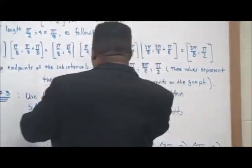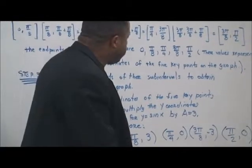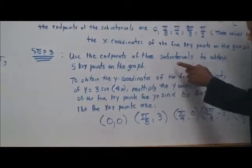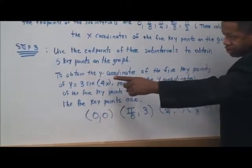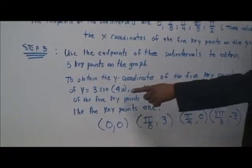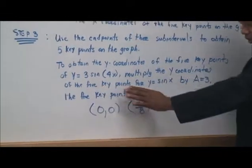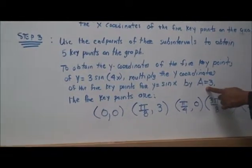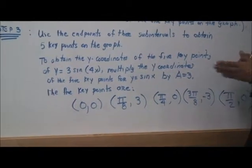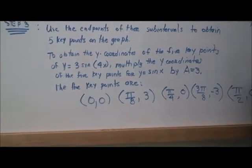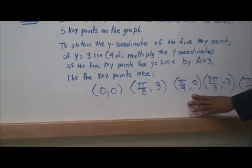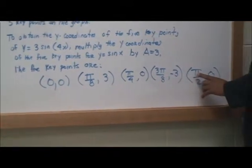Step 3: use the endpoints of these sub-intervals to obtain the five key points. To obtain the y-value coordinates for y equals 3 times sine of 4x, we multiply the y-coordinates of the key points for y equals sine x by A, which is 3. The five key points are: (0, 0), (pi/8, 3), (pi/4, 0), (3pi/8, -3), and (pi/2, 0).